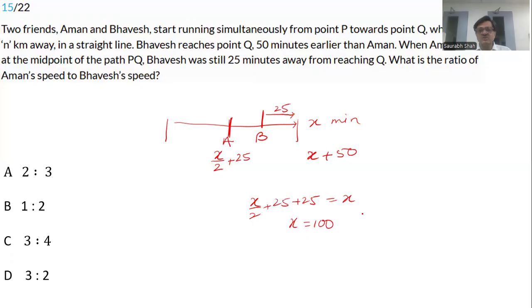The time that Bhavesh took to reach the opposite side is 100 minutes. So Aman's time would be 150 minutes. The timings are in the ratio 2 is to 3. So speeds are in the ratio 3 is to 2, but we are asked Aman to Bhavesh, so it is 2 is to 3. That is the right answer. Remember, we have 3 is to 2 also in the option. Be very careful. That option should have been ideally eliminated very quickly. We know Aman's speed is less than Bhavesh. How can we have 3 is to 2? Be careful of such traps. The answer is option A, 2 is to 3.